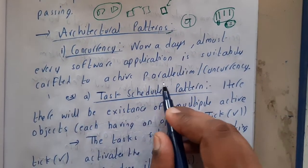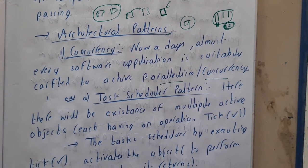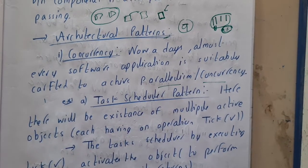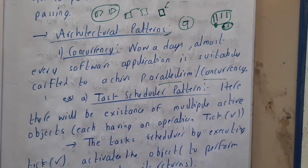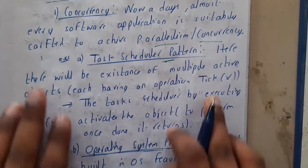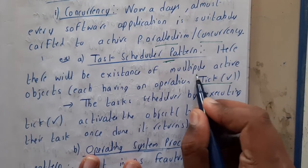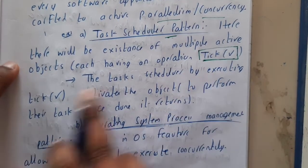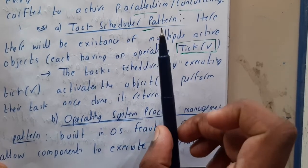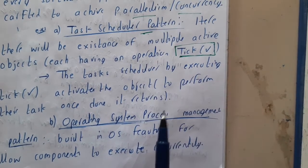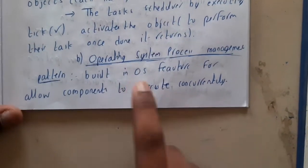Almost every software application is suitably crafted to achieve parallelism or concurrency. You might wonder: how can things run concurrently without two operations colliding? In operating systems, we use a task scheduler pattern. There will be multiple active objects, each having an operation called 'tick.' The task scheduler, by executing tick, activates the object to perform the task; once done, it returns. You can think of tick as a key — once an object takes it, it opens the door, does its job, then locks the door and returns the key.